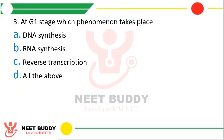Question 3: At G1 stage, which phenomenon takes place? Option A: DNA synthesis. Option B: RNA synthesis. Option C: Reverse transcription. Option D: All the above. The correct answer is Option B, RNA synthesis.